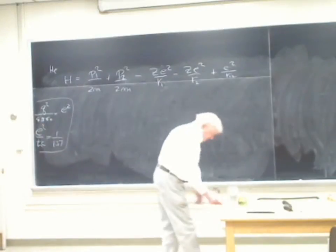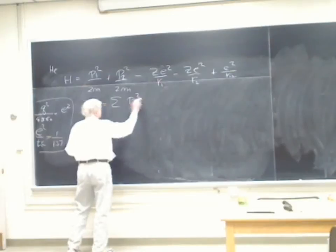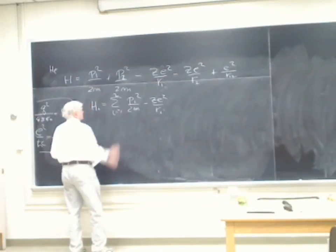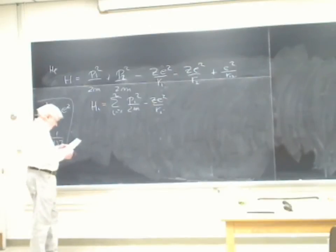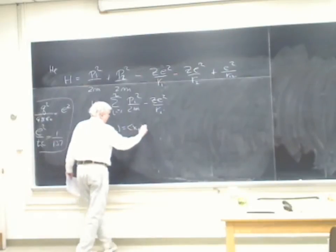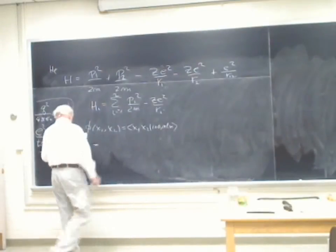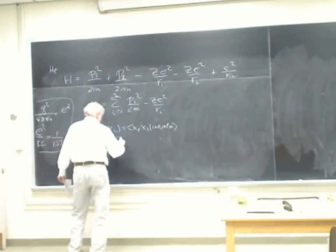If we take H₀ as simply the sum of p² over 2m minus Ze² over r_i, for i equals 1 to 2, then we're dealing with two hydrogenic Hamiltonians that don't interact. We can say if we put one electron in the 1,0,0 state and the other in the NLM state, then with the appropriate antisymmetry it would simply be ψ₁₀₀(x₁) ψ_NLM(x₂).